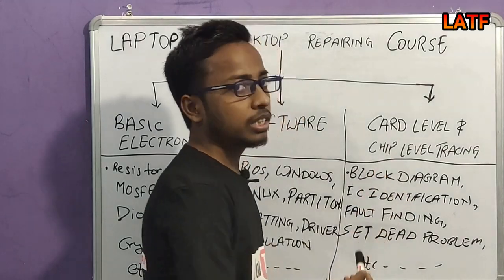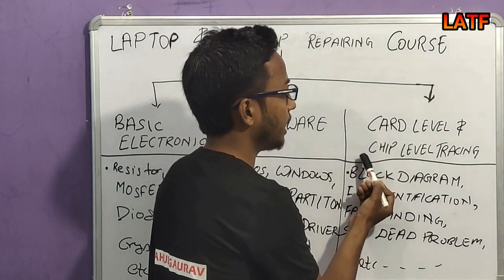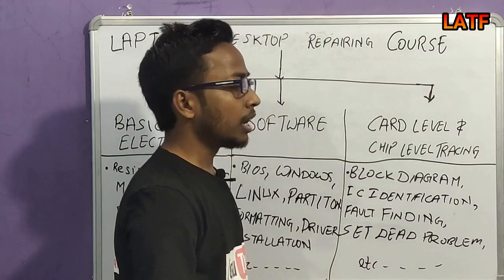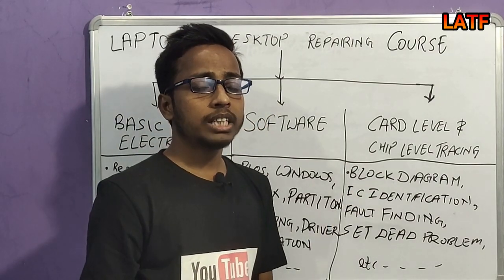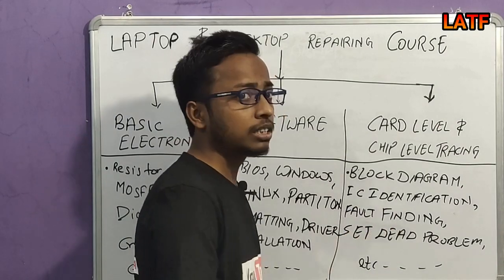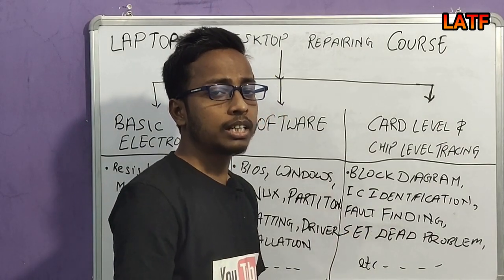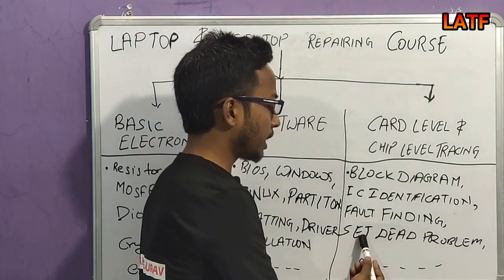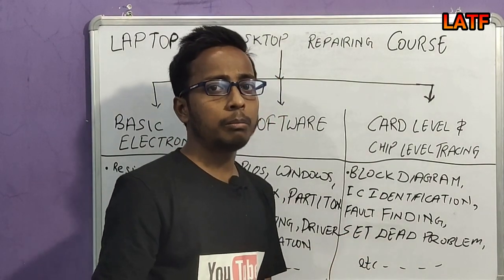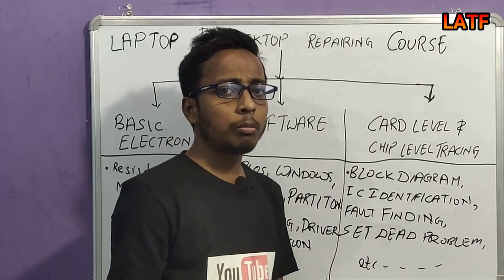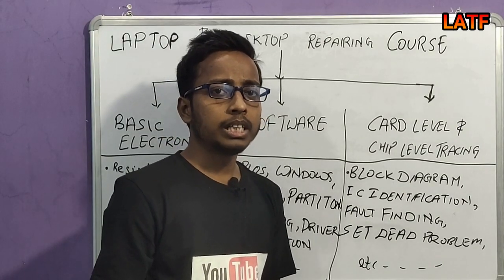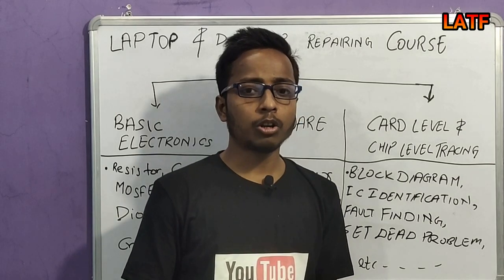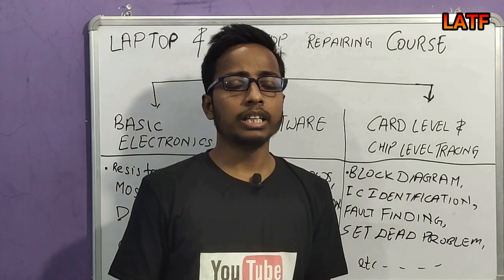Now let's move to the Card Label and Chip Label Tracing section. In this section, I will tell you the block diagram and how to read the schematics of the motherboard — IC identification, that is what are the different types of ICs on the motherboard — for finding solutions to problems like date problem, touch problem, LAN problem, sound problem, touchpad problem, and display problem.